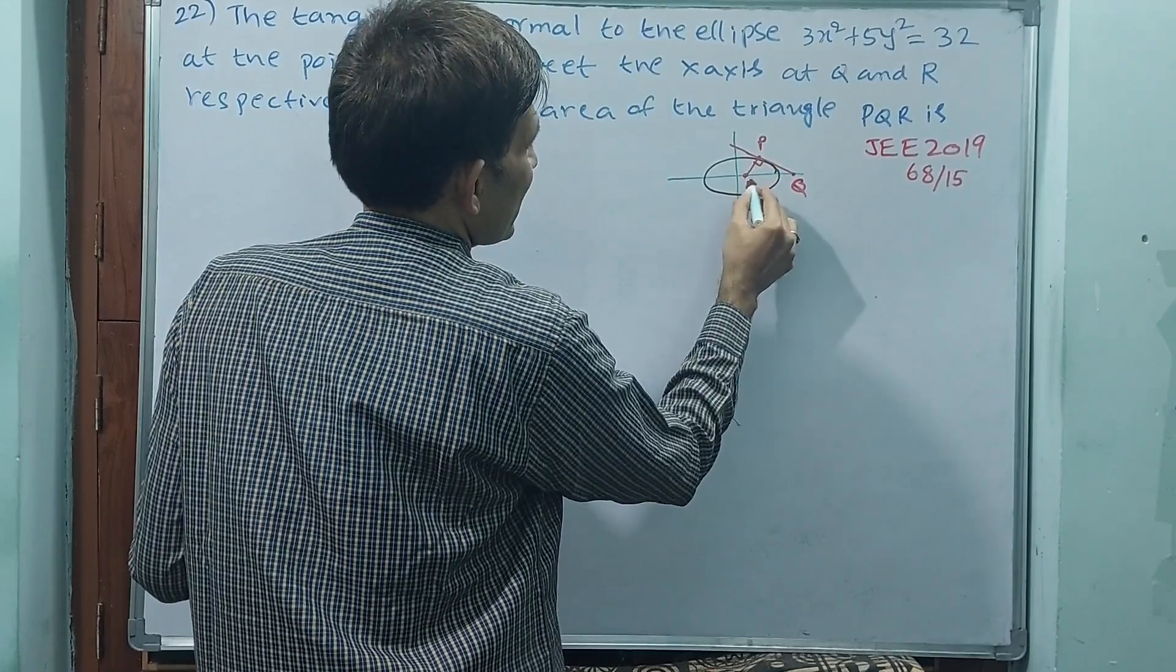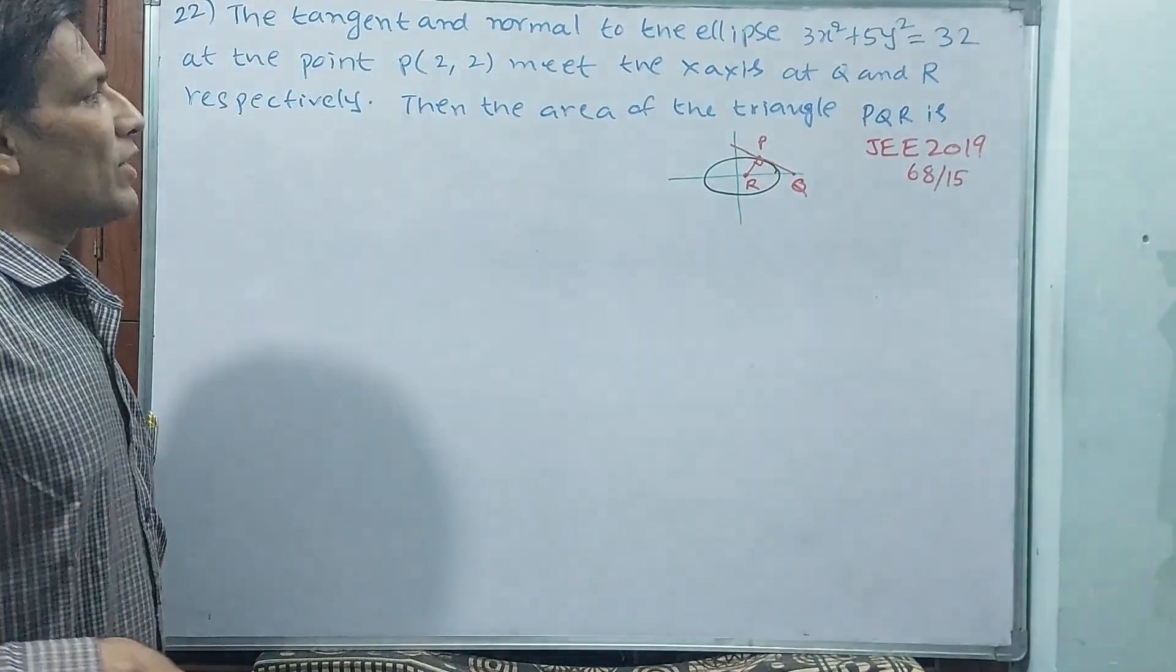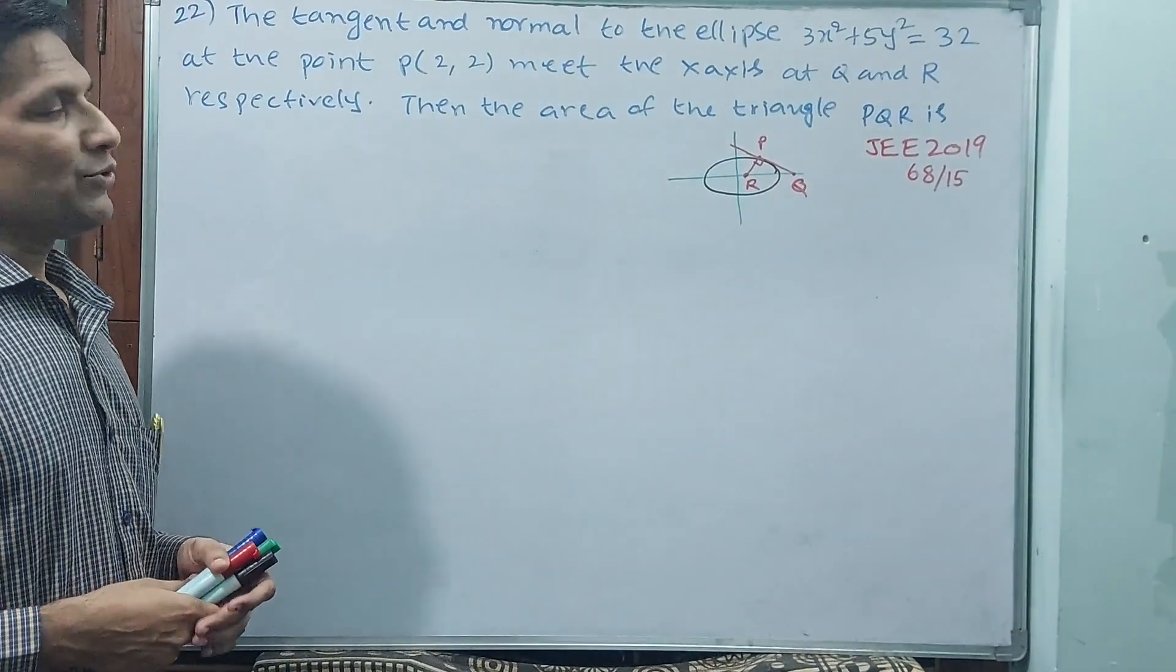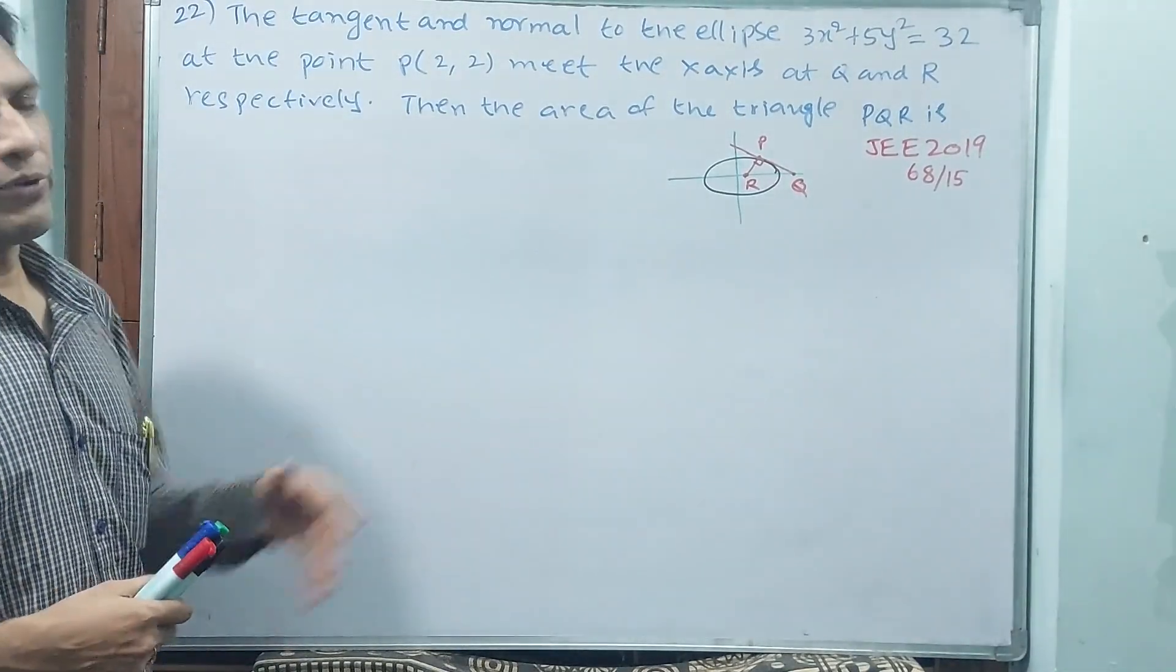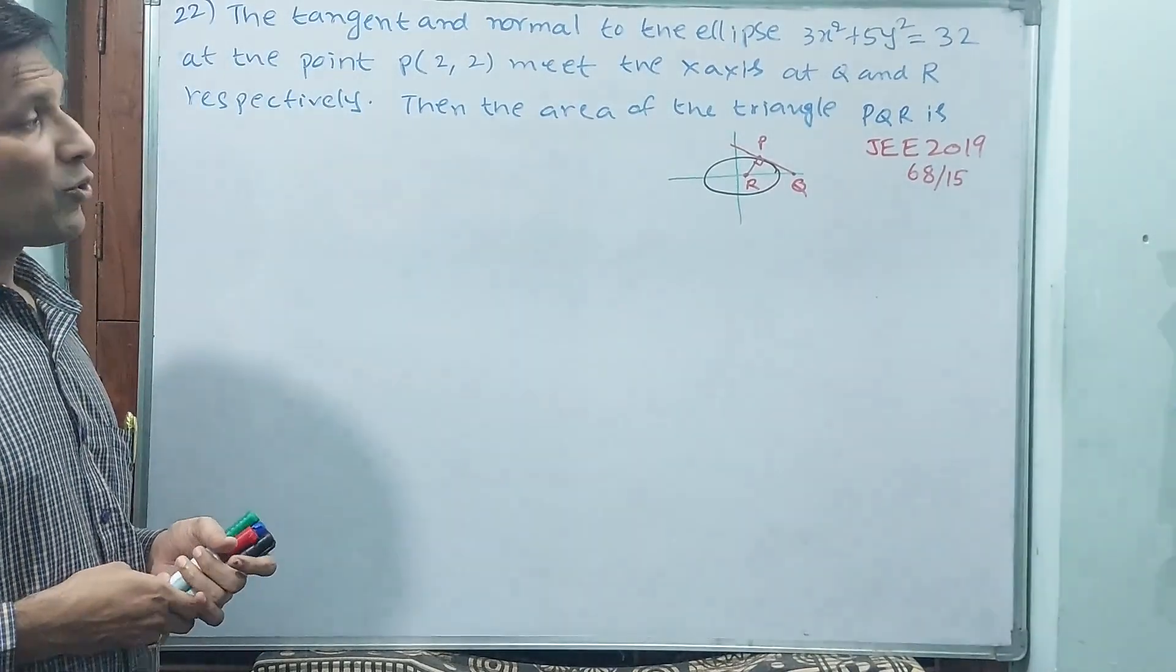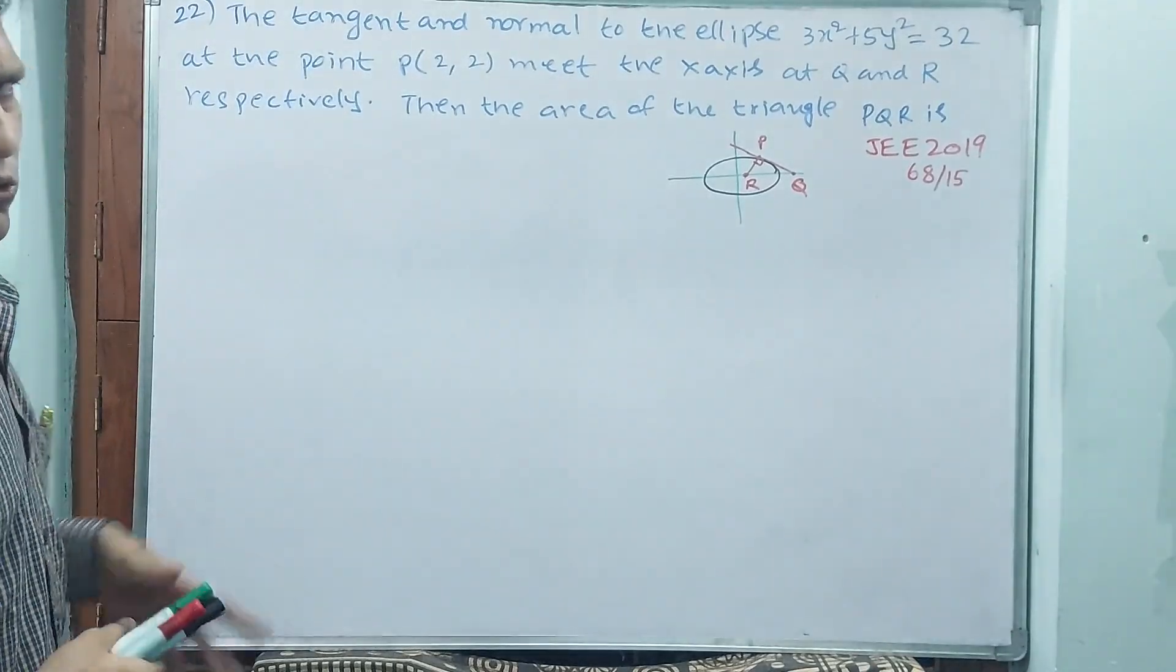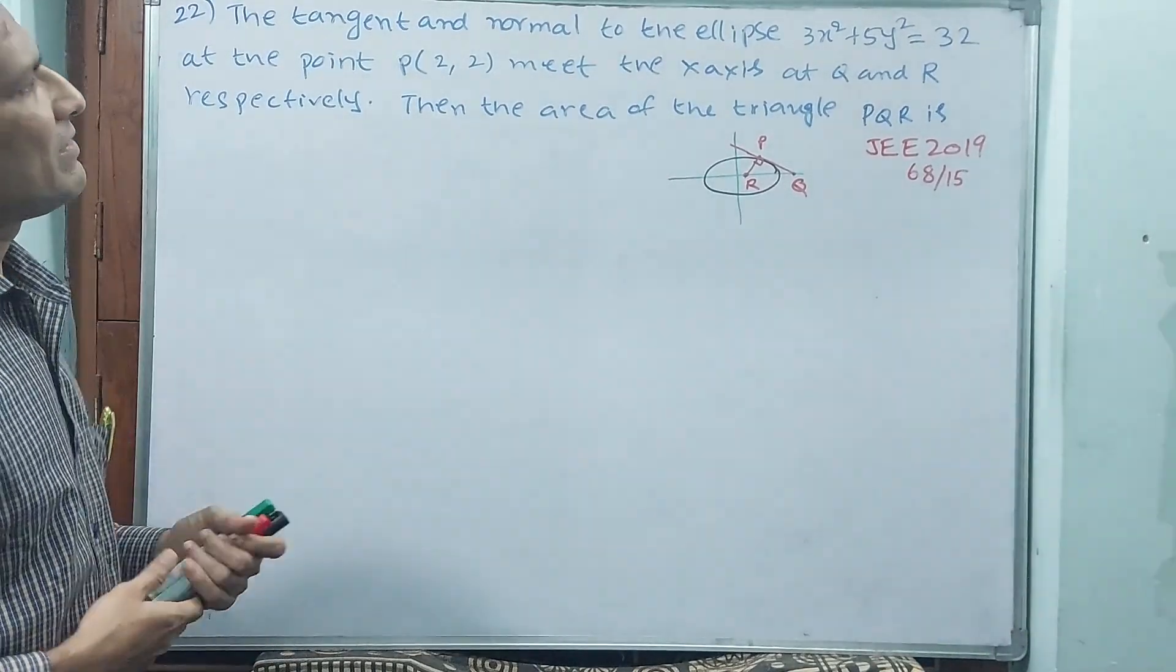Normal, that means 90 degrees, this is meeting at R. PQR, that is the triangle. You have to find PQ is tangent and PR is normal. Tangent, normal means slope. Once you find, automatically you can find the equation of both.